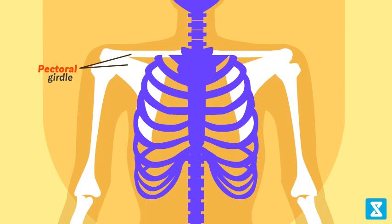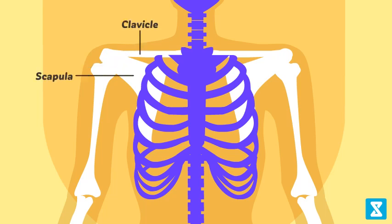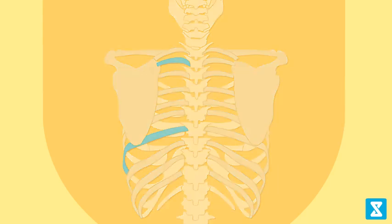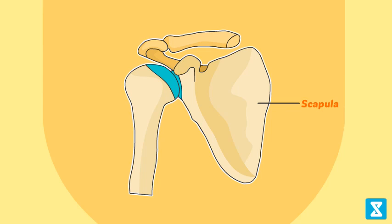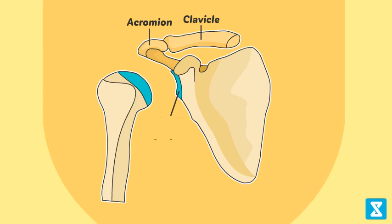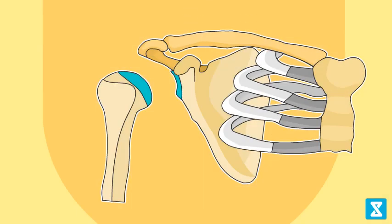Each half of the pectoral girdle consists of a clavicle and a scapula. The scapula is a large triangular flat bone situated in the dorsal part of the thorax between the second and seventh ribs. Its dorsal body has a slightly elevated ridge called the spine, which projects as a flat expanded process called the acromion. The clavicle articulates with the acromion. Below the acromion is a depression called the glenoid cavity, which articulates with the head of the humerus to form the shoulder joint. Each clavicle is a long slender bone with two curvatures, commonly called the collar bone.